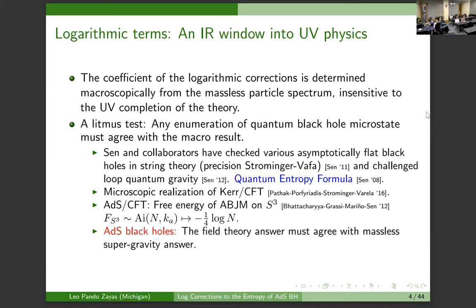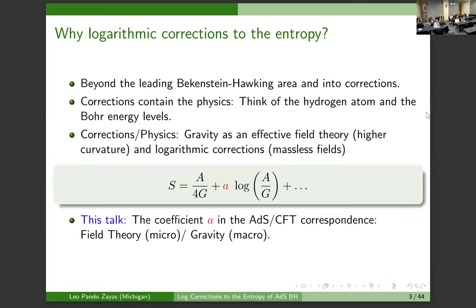I want to emphasize that these quantum corrections are really where the structure and spectrum of the theory enters. It's a quantity that is not like the leading piece, which is very geometrical and very universal. This number here is the result of a one-loop computation in which you need to see things running in loops — and that's fairly quantum.